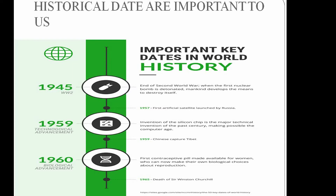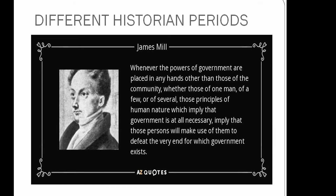Next, we are going to see about how different historians periodize Indian history. According to James Mill, before the British came to India, Hindu and Muslim monarchs ruled the subcontinent. Mill believed that religious intolerance, caste-based discrimination, and superstitious practices were largely prevalent in Indian society.